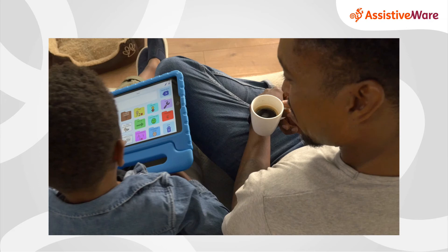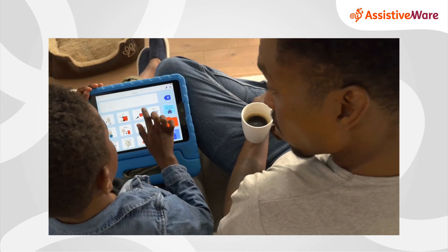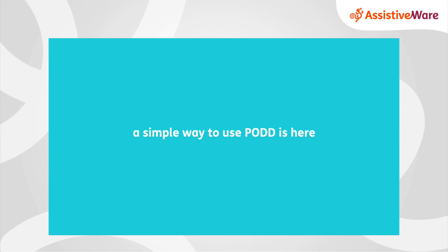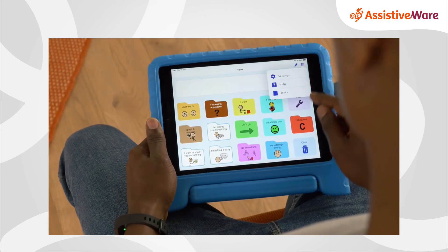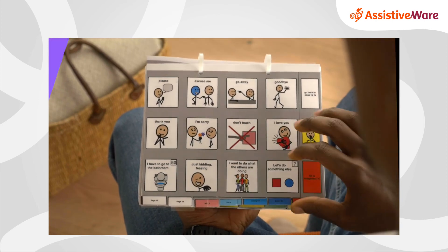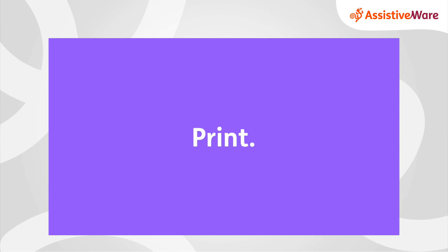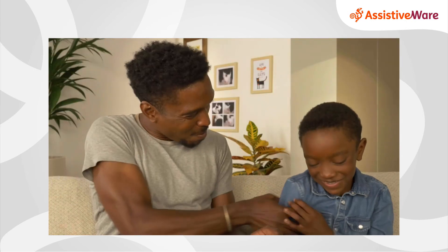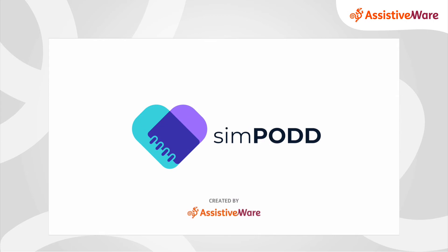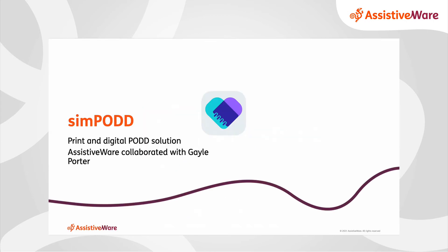Now let's look at this short video for a simple and effective look at the Sympod system. A simple way to use Pod is here — you just tap to communicate. You can make your Pod books right from the app: simply choose your book and customize. Print it all at once — you'll save a lot of time and effort, so just tap and print. We've made it really simple so you can focus on connecting: just tap, print, and connect. Sympod — the only English Pod with a printing interface within the app. Sympod is a game changer for any of you that might be using Pod.